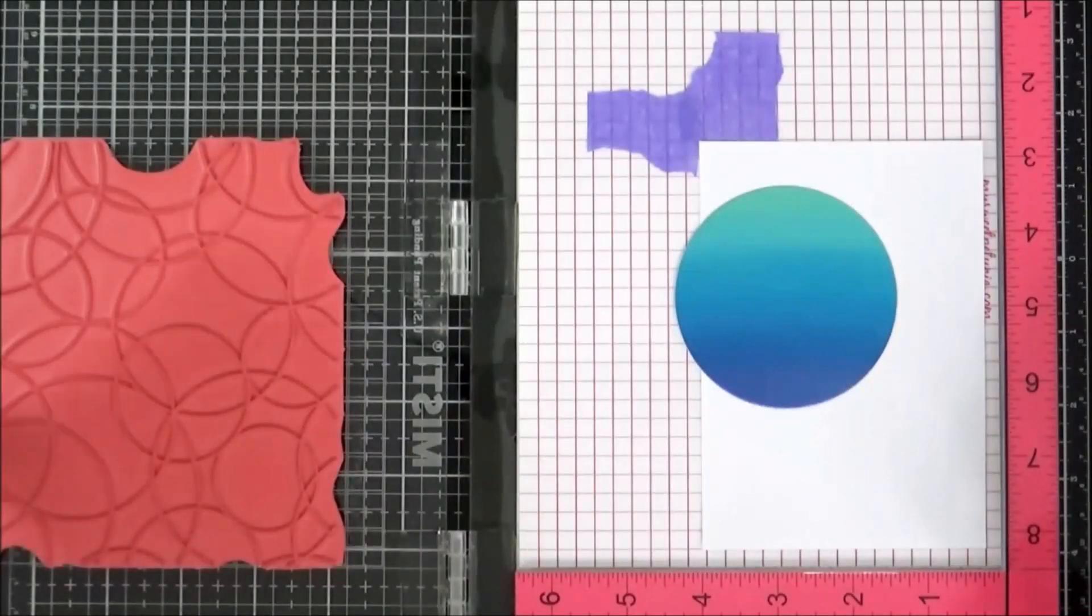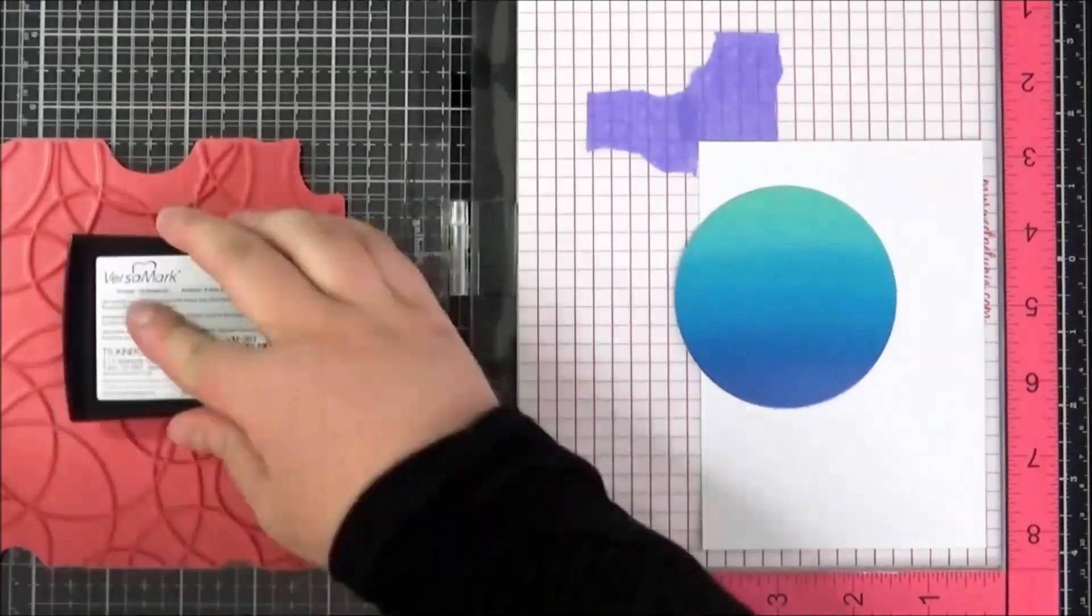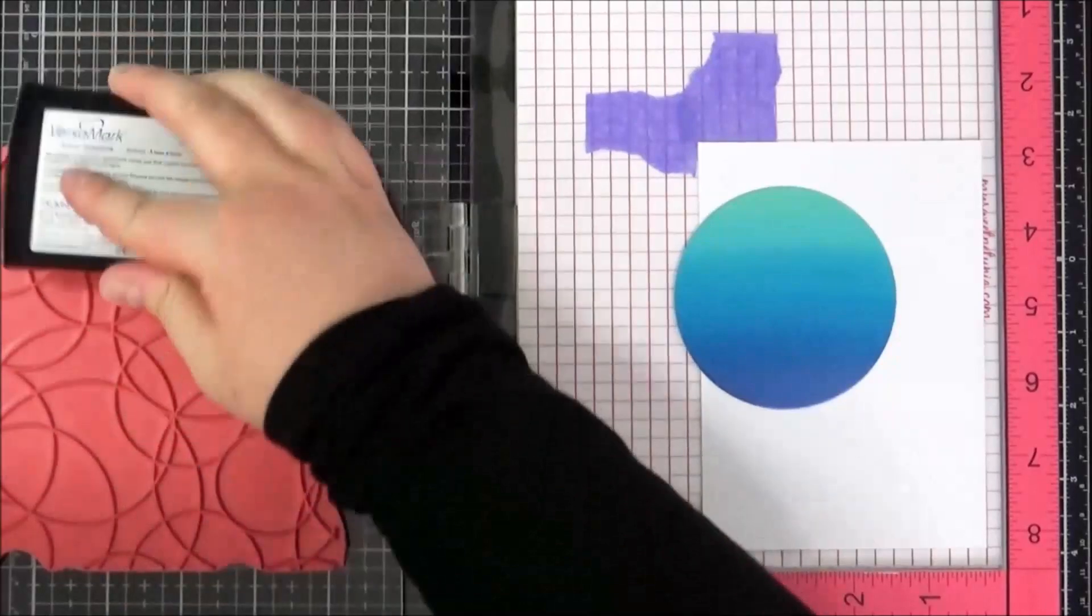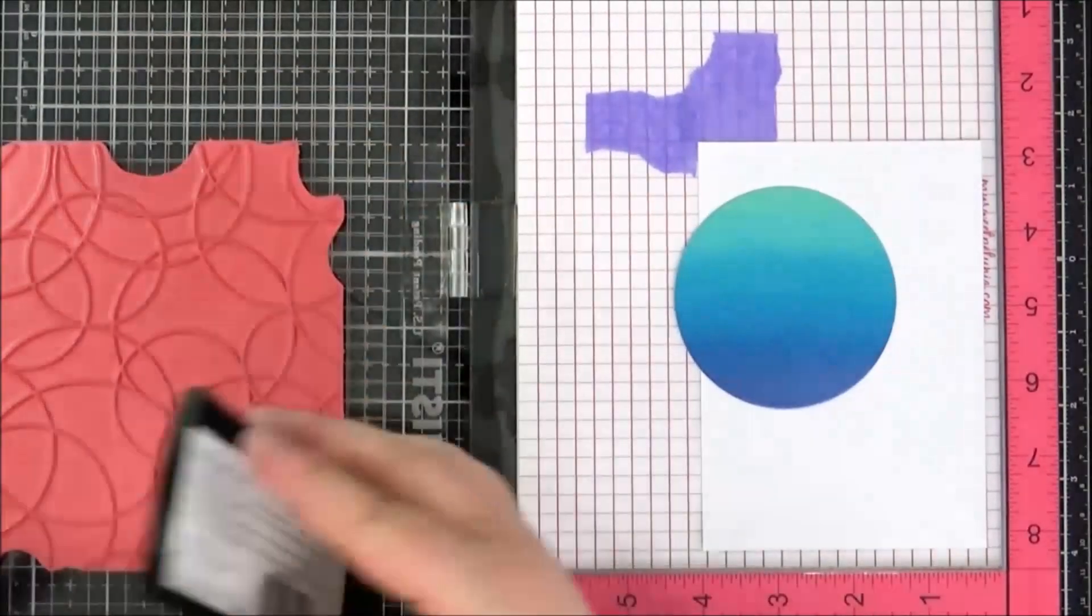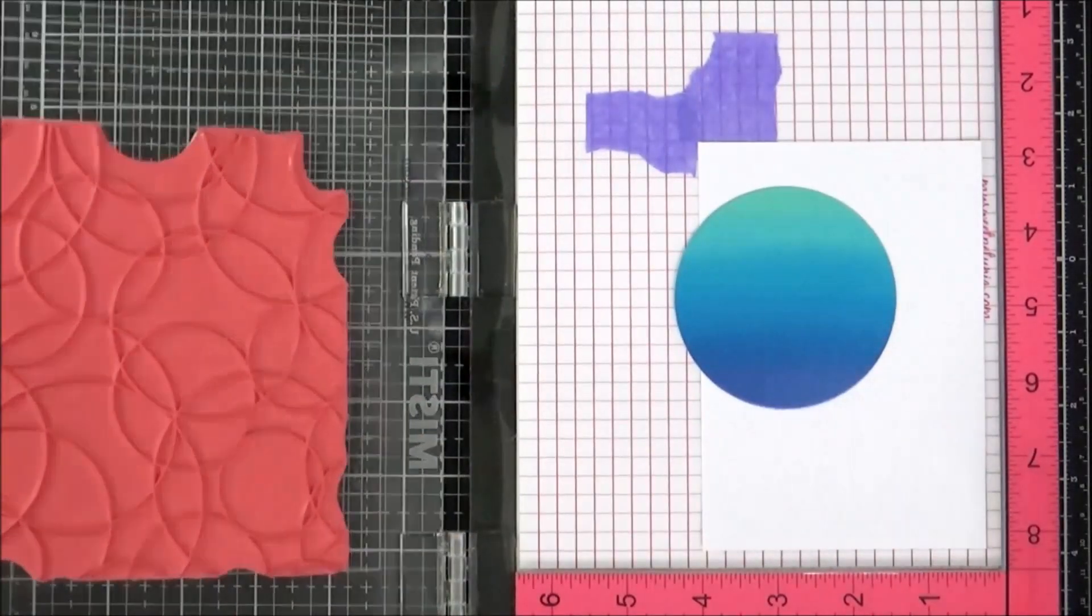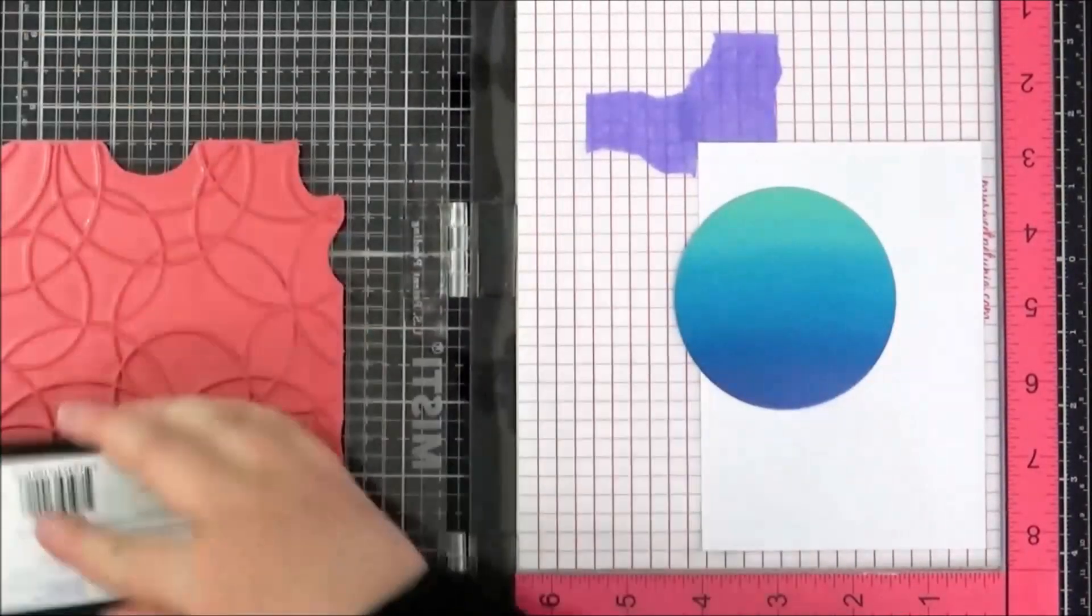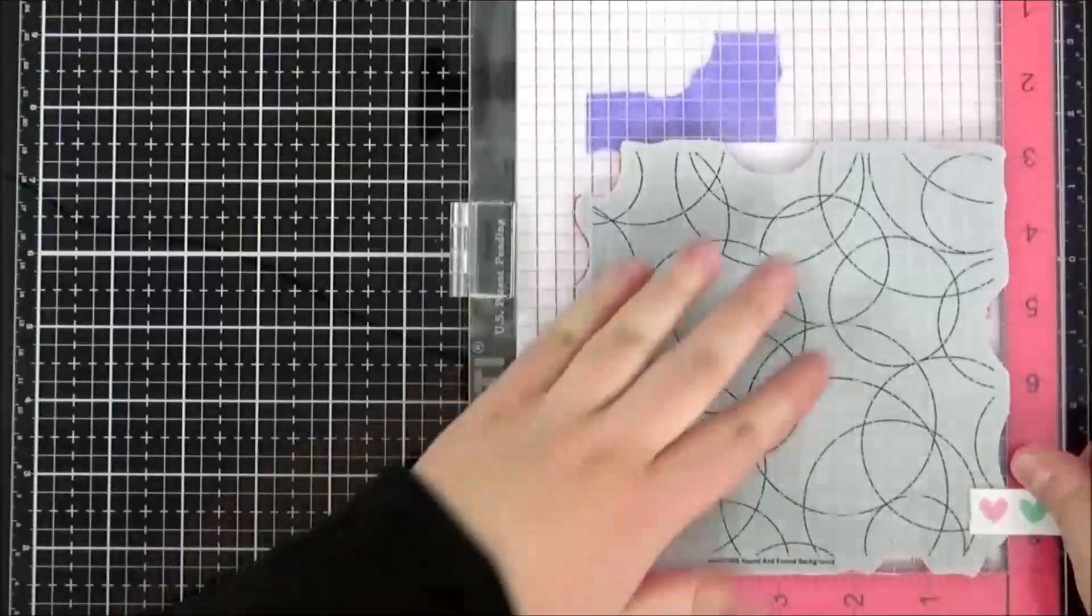I'm prepping that again with an anti-static powder tool, then I can ink up that stamp again with the Versamark ink. I can make sure it's completely well inked up, then stamp that down.